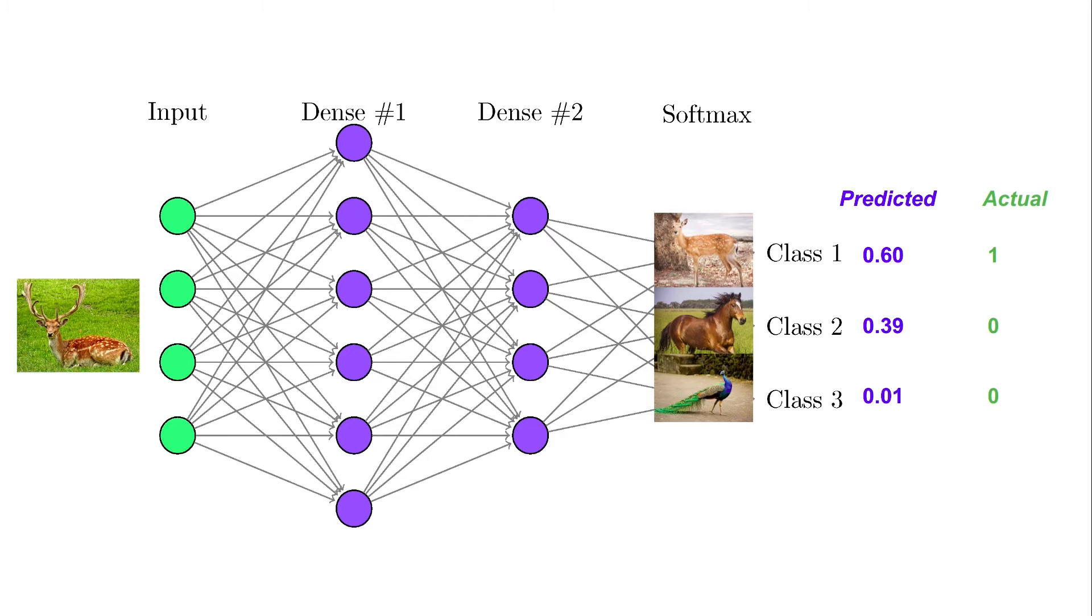Before we go any further, let's just look at this neural network which classifies the input image into three classes: deer, horse, and peacock. Now look at the predicted probabilities and the actual labels of this image. Just look at these numbers and which of these actually gives more information.